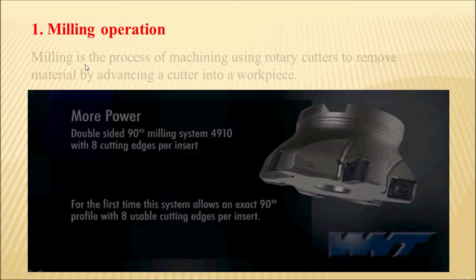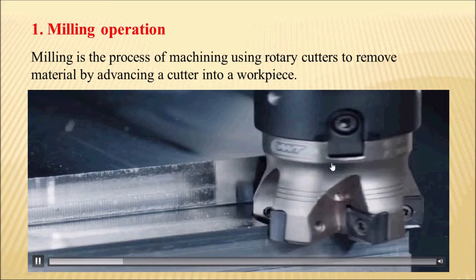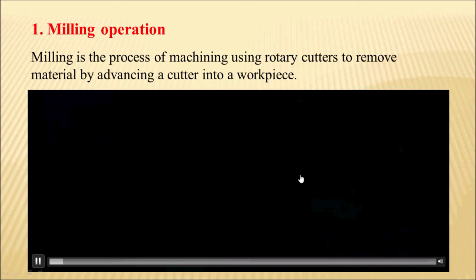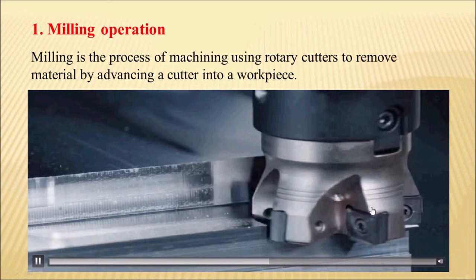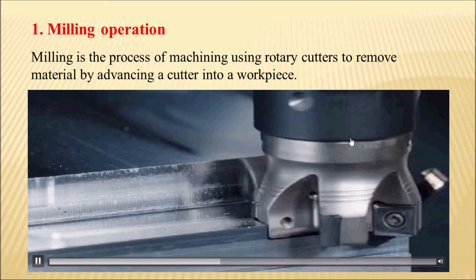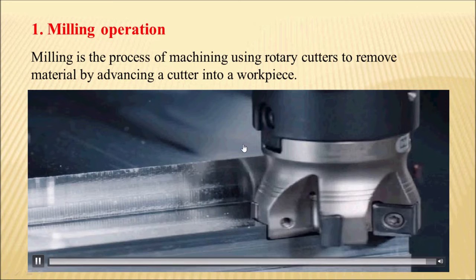First of all, what is a milling operation? Milling is basically a machining process that uses rotary cutters to remove material by advancing this cutter into the workpiece. This is a multi-edge cutting point tool which has multiple cutting edges over it. This multipoint cutting edge tool is mounted over the spindle or arbor of a milling machine, and the spindle and arbor rotate this rotary cutting tool, which is fed against the workpiece to remove material.